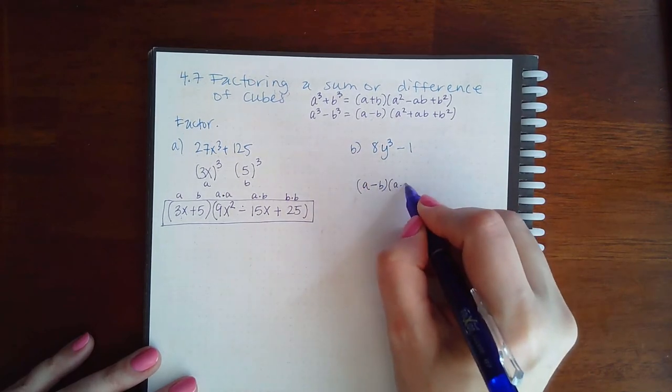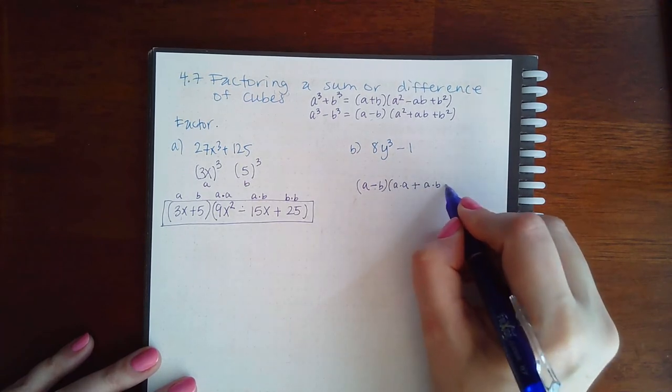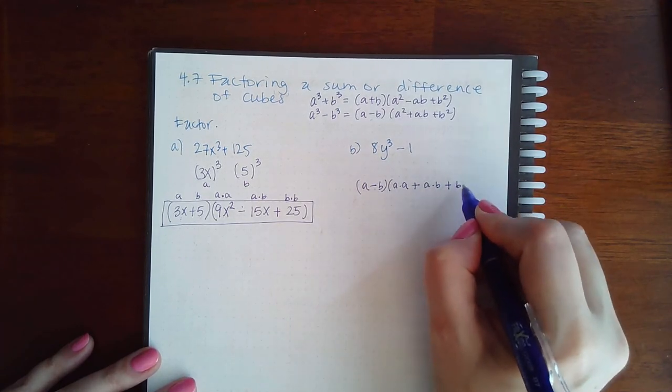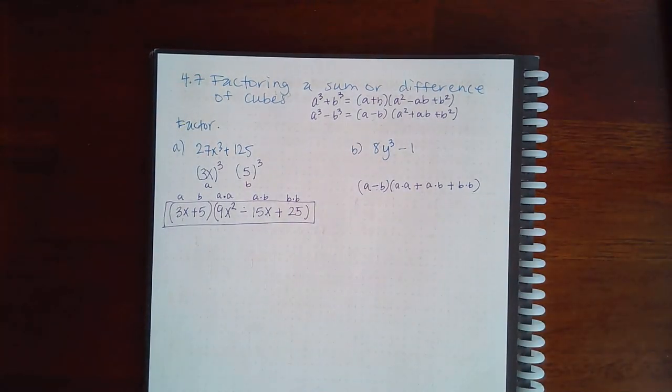Then a times a, then the opposite of that, which is plus. Then a times b, and then this sign is always a plus, and then finally b times b. This is really the formula that I use in my brain when I'm factoring cubes.